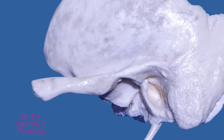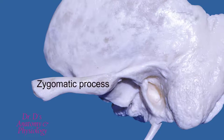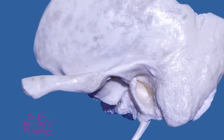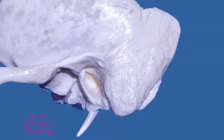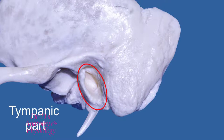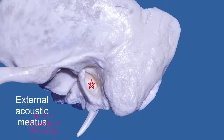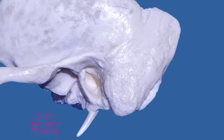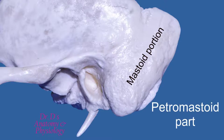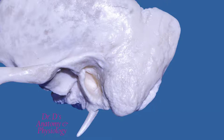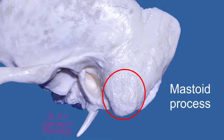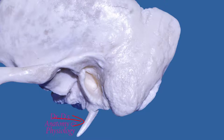To review: here is the zygomatic process, the part that extends anteriorly and joins with the temporal process of the zygomatic bone to give you the zygomatic arch. Somewhat posterior and inferior to it we find the tympanic part, which forms the external acoustic meatus — the external auditory canal. Here we have the mastoid portion of the petromastoid part, bearing the mastoid process. And this slender spine-like process is the styloid process.